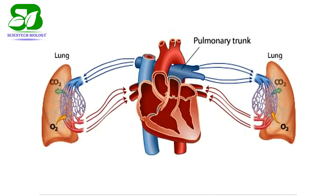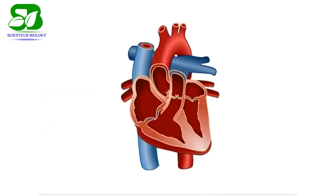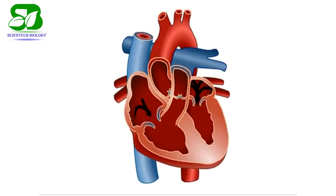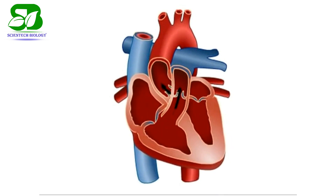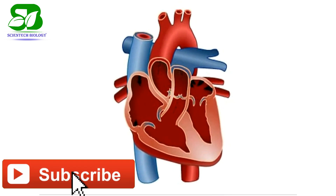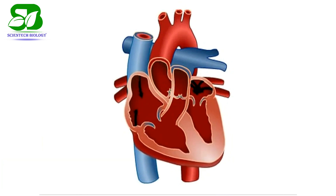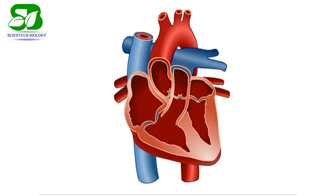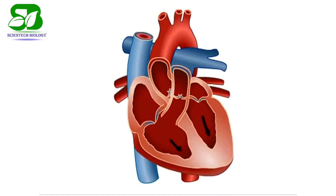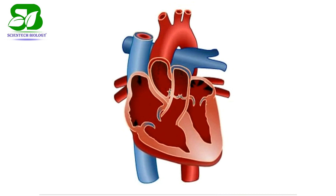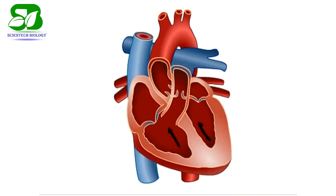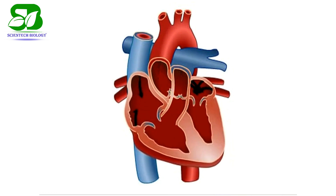Watch how blood flows through the heart. This diagram shows blood entering the heart from the body — this blood is deoxygenated. After traveling to the lungs, it returns to the heart in the form of oxygenated blood. This process repeats itself over and over again to effectively deliver oxygen and nutrients to your body.